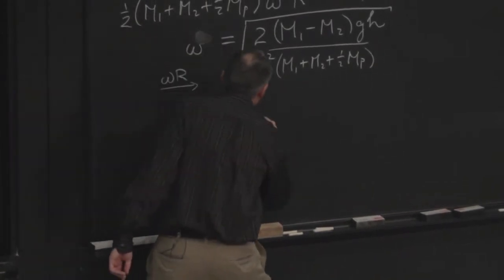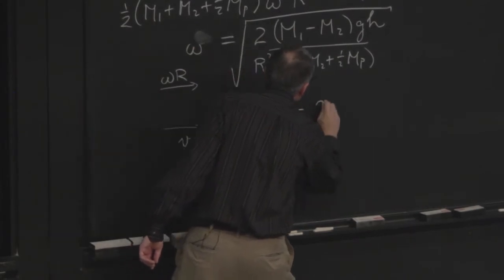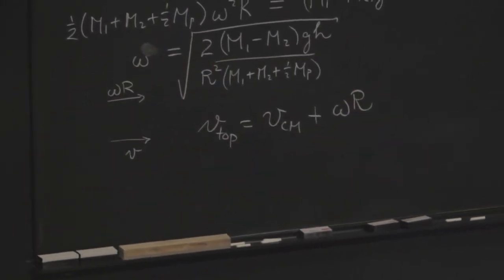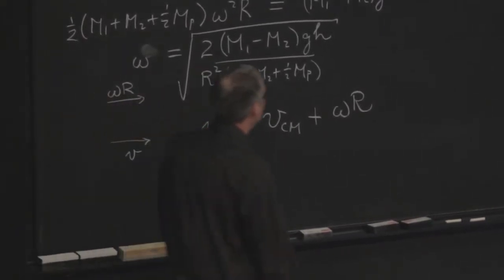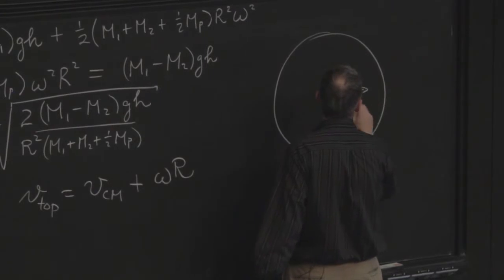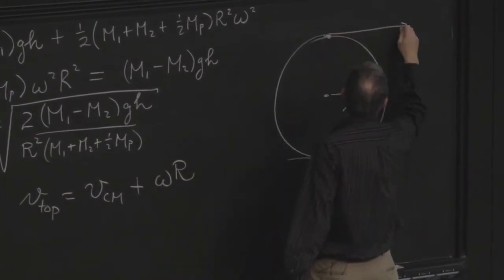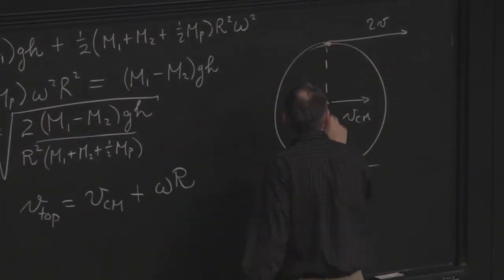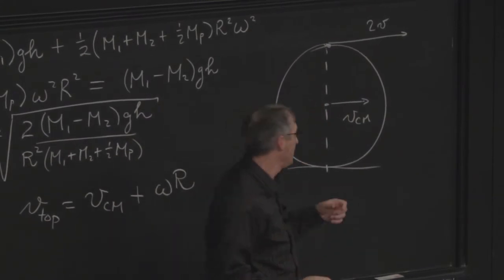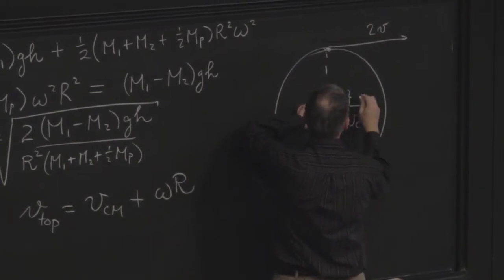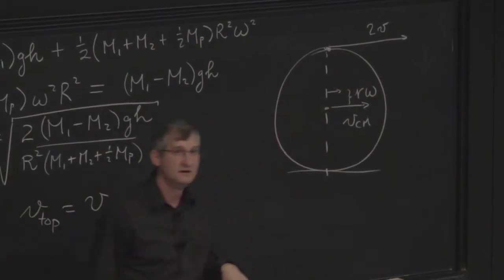So the top would be moving at speed 2v. If it rolls without slipping and v equals omega r, then the top would be moving at speed 2v. At any place along that line, we could just add vcm, and the extra bit would correspond to the radius times omega.